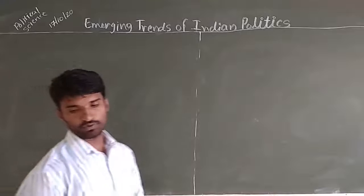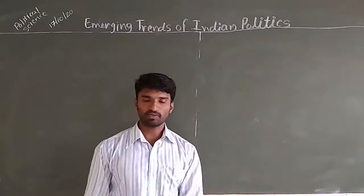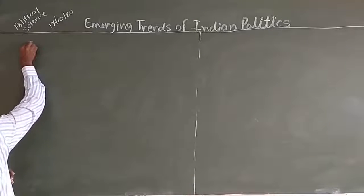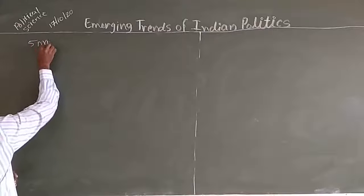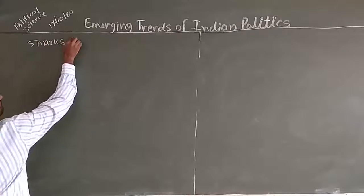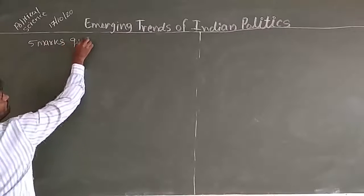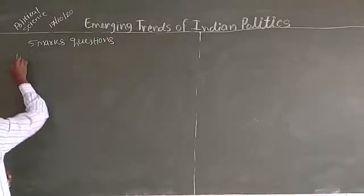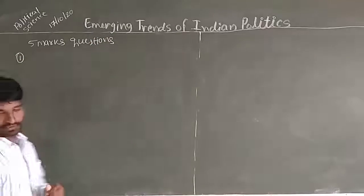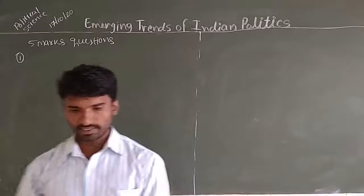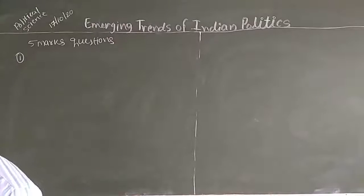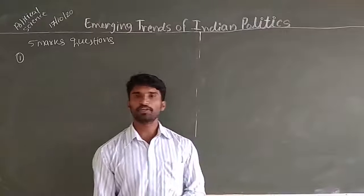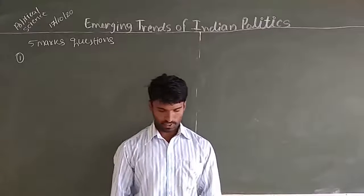Students, we will continue with the five-mark questions. The first question is: what are the goals for the rights of identity coordinates?